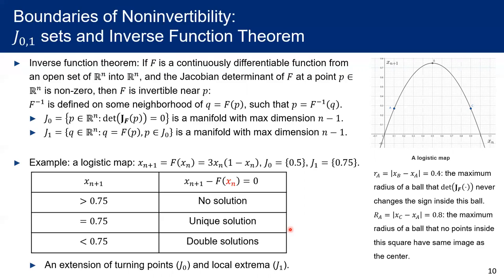Later on in literature, we find that there are two sets, where J0 is a collection of all points that have zero Jacobian determinants, and J1 is an image of every point belonging to J0. Now we will use a logistic map as an example to illustrate these concepts. We could derive that for this logistic map, J0 and J1 represent the x-coordinate and y-coordinate of the vertex of the parabola, which is shown in point B in this image.